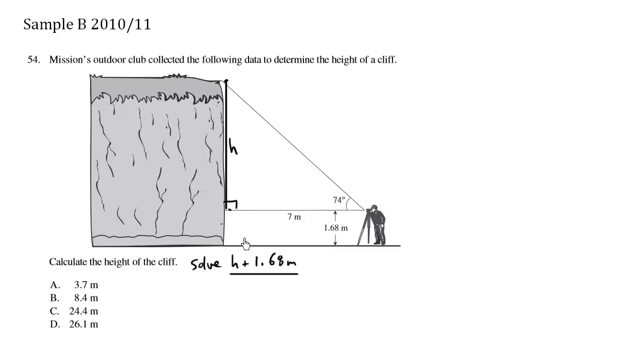Now let's solve h. We have a right angle triangle, so we're going to use SOH CAH TOA. We have the angle, we're interested in the opposite, and we have the adjacent. Opposite and adjacent means we're going to use tan. Tan of the angle, which is 74 degrees, equals the opposite, which is h, over the adjacent, which is 7 meters.